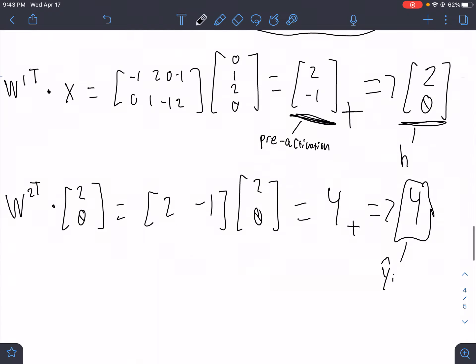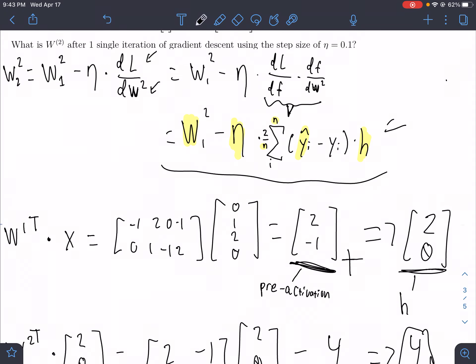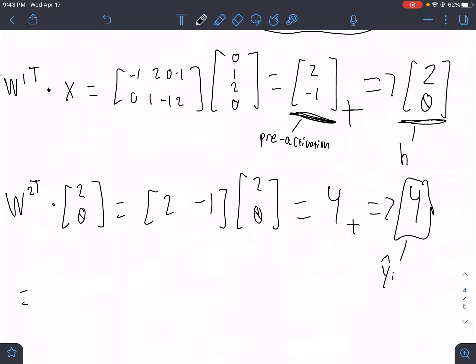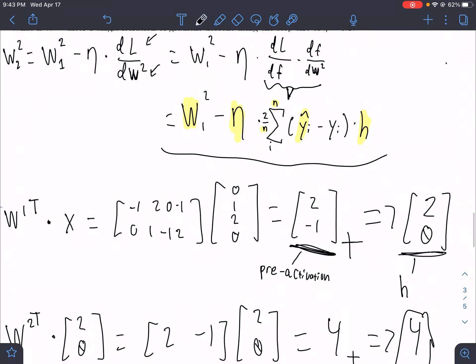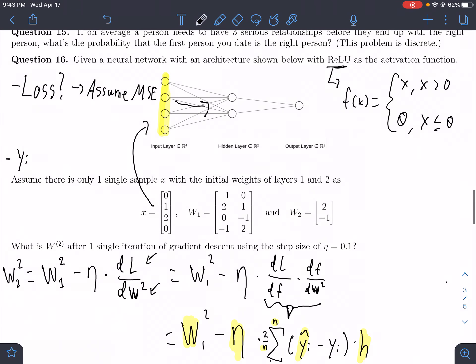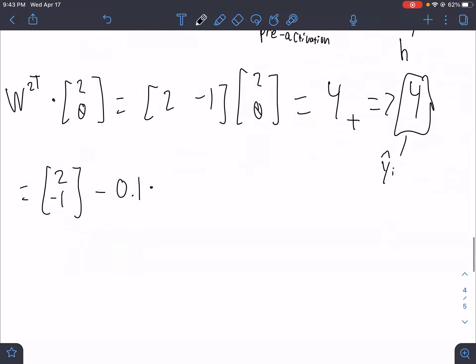We have all the pieces that we need. We have h and y hat. As I outlined above, we needed to solve for those and we got them. So let's lay out our function. w2 initially is 2, negative 1, minus 0.1 times 2 over n. In this case, what is n? Well, it's one single sample x. We only have one sample, so we're going to do 2 over 1.